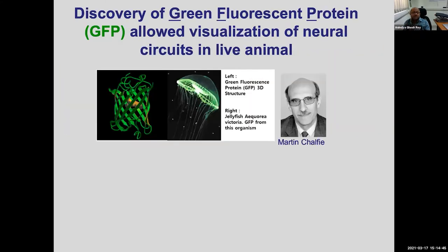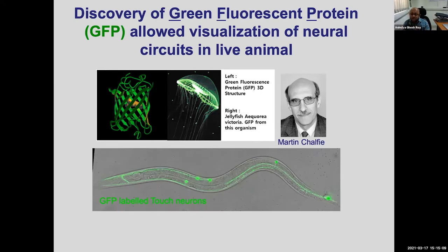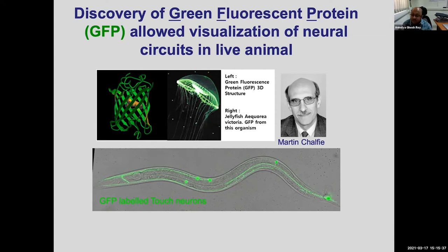This was followed by another remarkable discovery: green fluorescent protein identified from jellyfish in a marine biology lab in Woods Hole, Massachusetts. Martin Chalfie was quick to clone GFP and express it in worm neurons—worm neurons were actually the first cells where GFP was expressed. This changed the way we look at circuitry; one can now look at neural circuits in live animals. Here you can see touch neurons labeled with GFP in enormous detail. GFP has since been modified to be calcium-sensitive, enabling imaging of neuronal activity in vivo using two-photon microscopes.